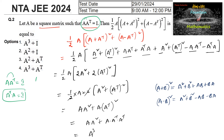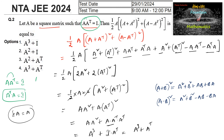Now, A into A square is A cubed, and A into A transpose is I, so I into A transpose gives A transpose. Therefore the final answer is A cubed plus A transpose, which is option C.